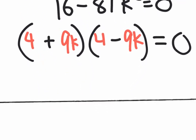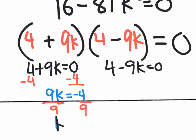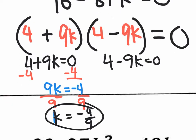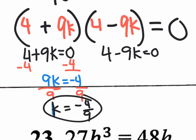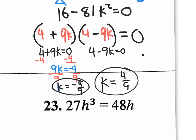This is your new factored form equation, and all you need to do now is split them and solve. You have 4 plus 9K equals 0 and 4 minus 9K equals 0. For the left one, subtract 4 to get 9K equals negative 4, then divide by 9 on both sides: K equals negative 4 ninths. Since it's the same binomial just with a sign change, the other gives K equals positive 4 ninths. You could write the answer as K equals plus or minus 4 ninths.